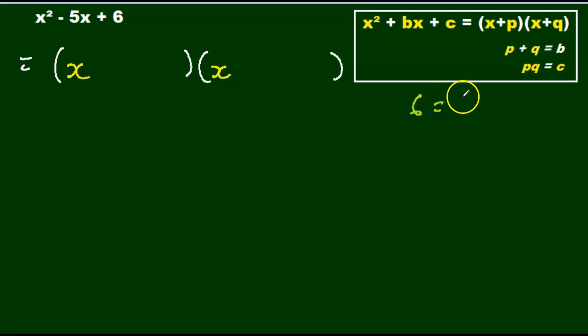6 is 1 times 6 or 2 times 3. Now, 6 plus 1 equals 7 or 6 minus 1 equals 5. 2 plus 3 equals 5 or 3 minus 2 equals 1.